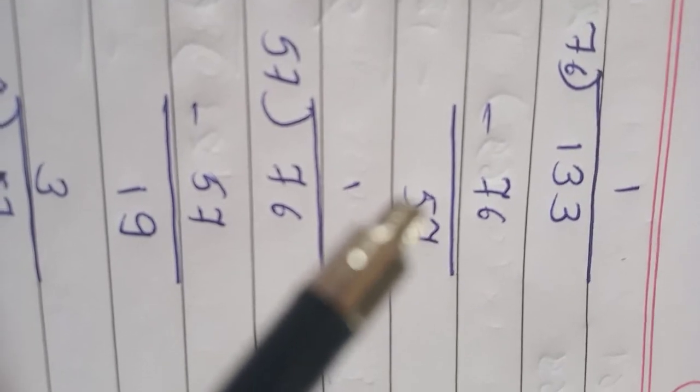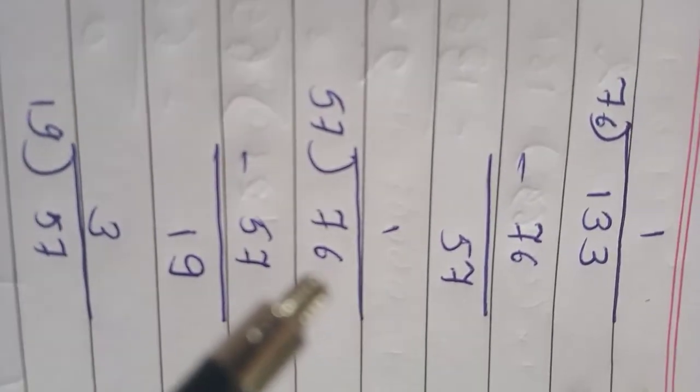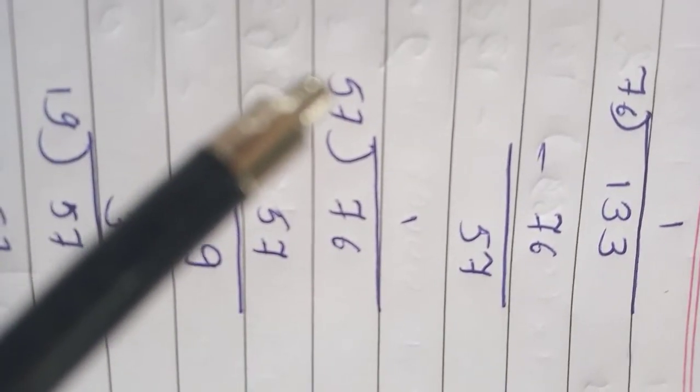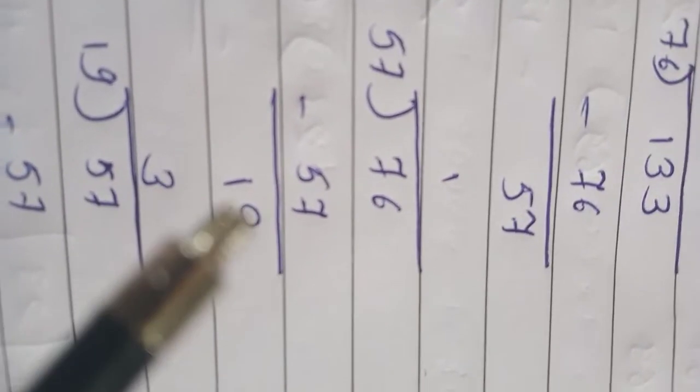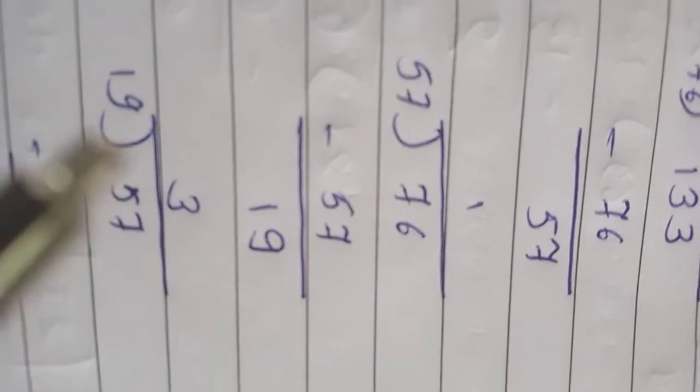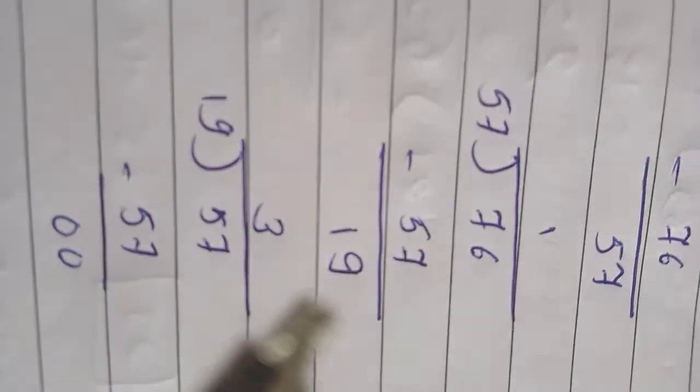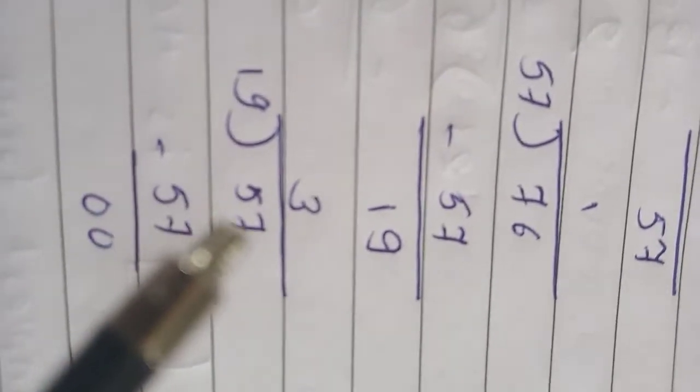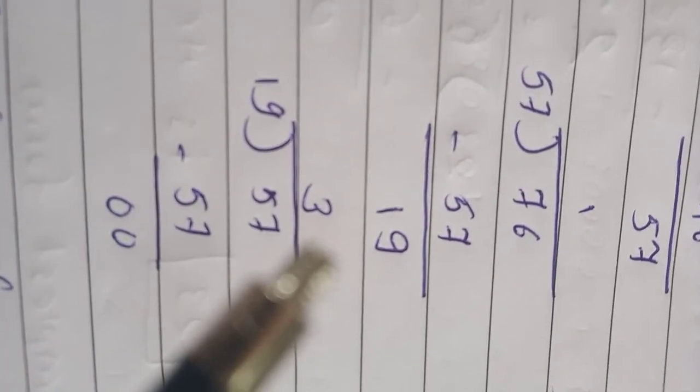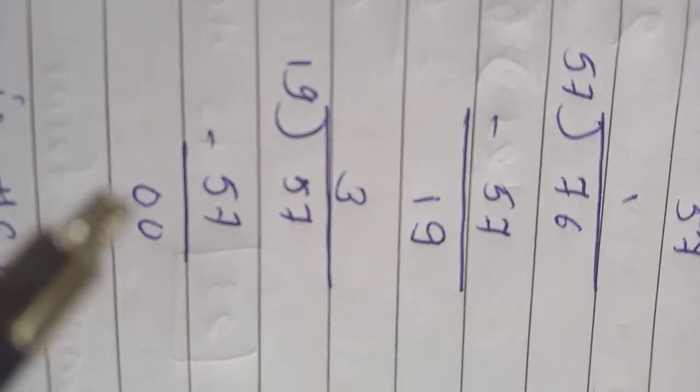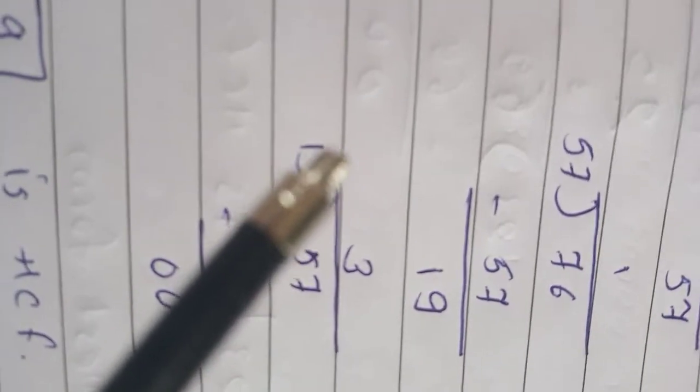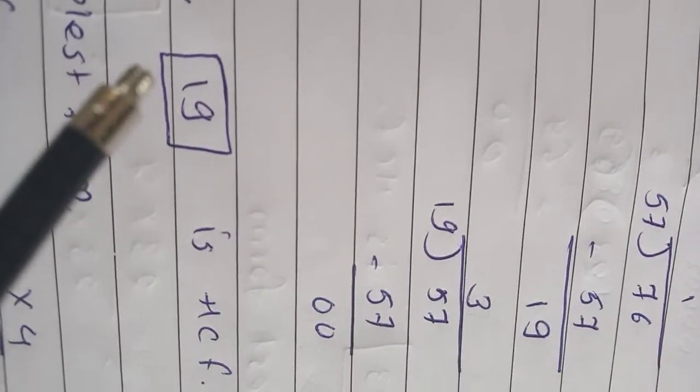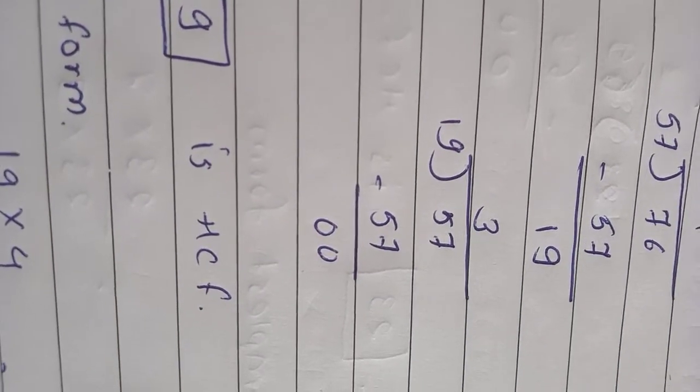Now we have to divide 76 by 57. So 76 divided by 57. 57 ones are 57. What is the remainder? 19. So we have to divide 57 now with 19. So 57 divided by 19. We get 19, 3s are 57. So remainder is 0. So our HCF is 19.